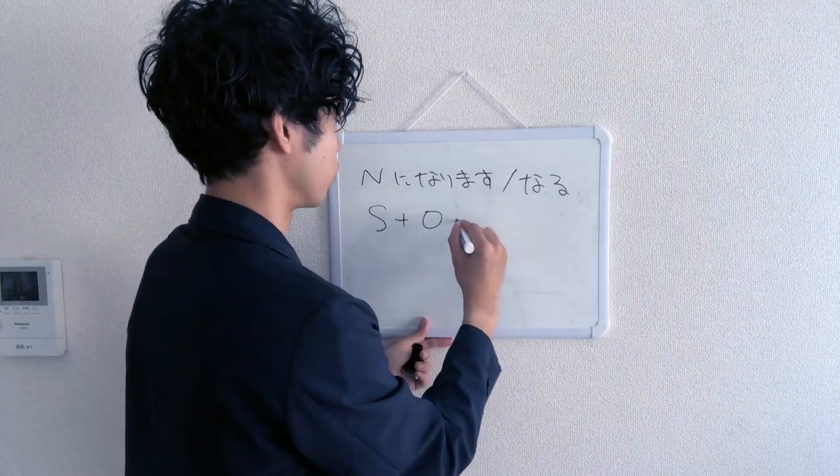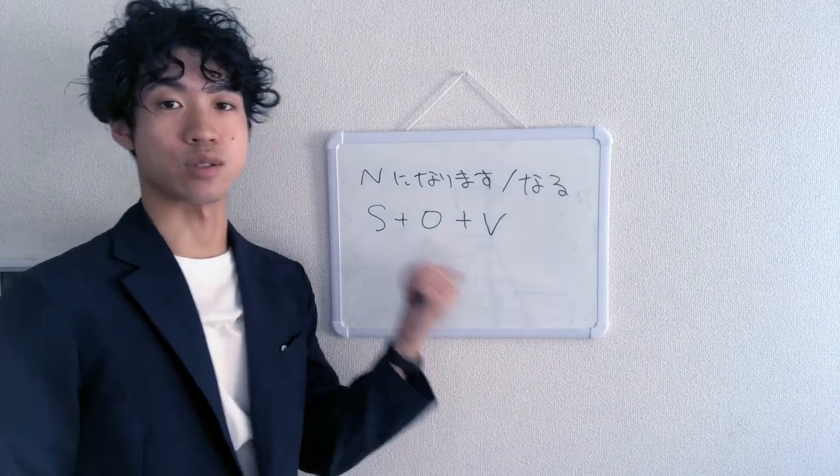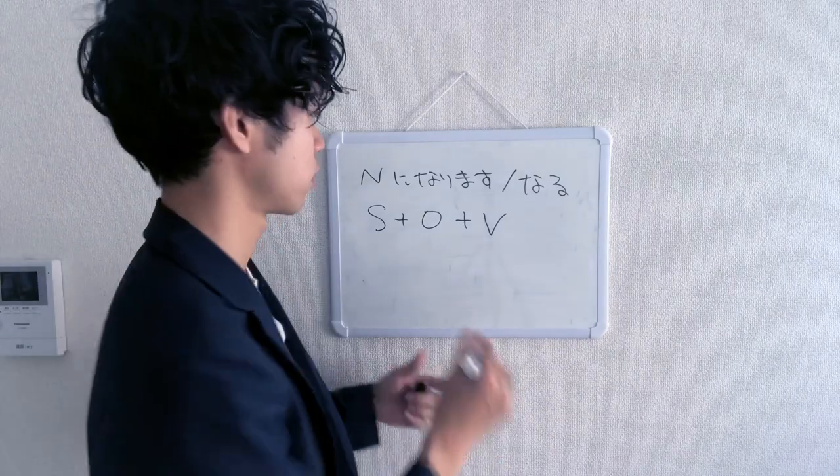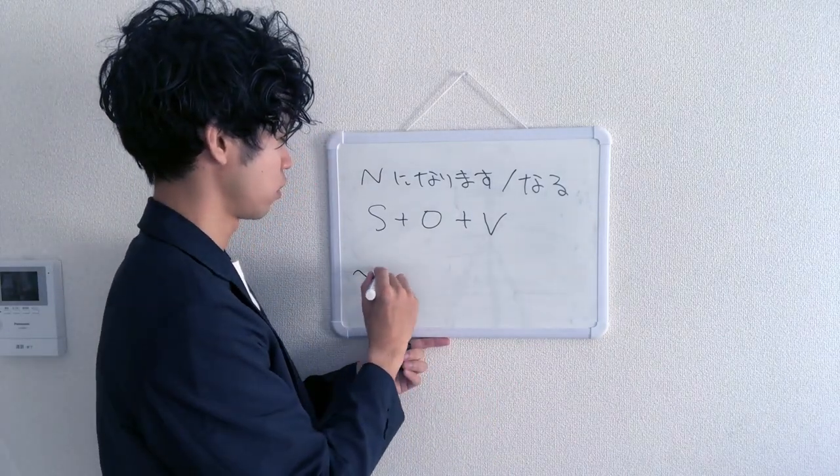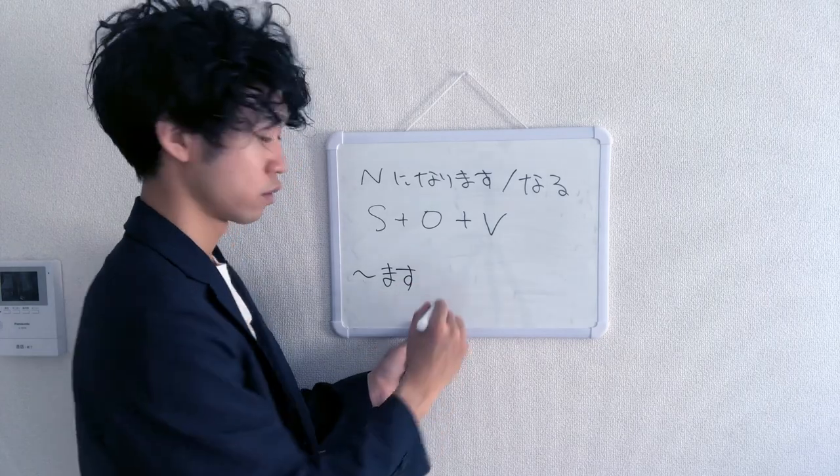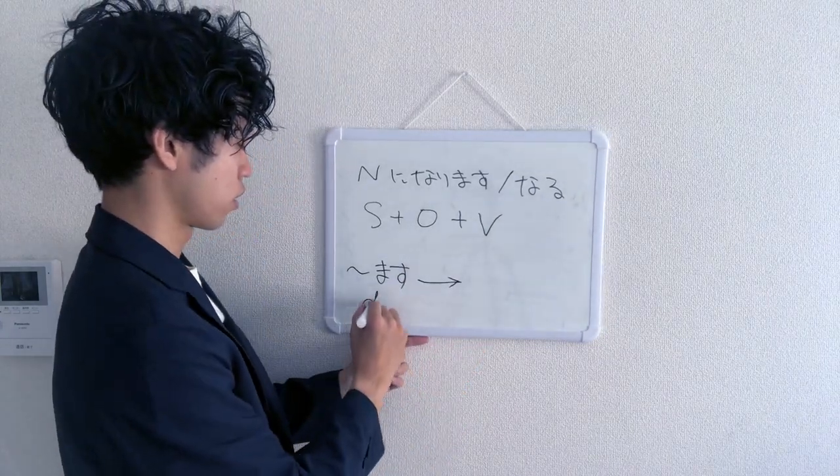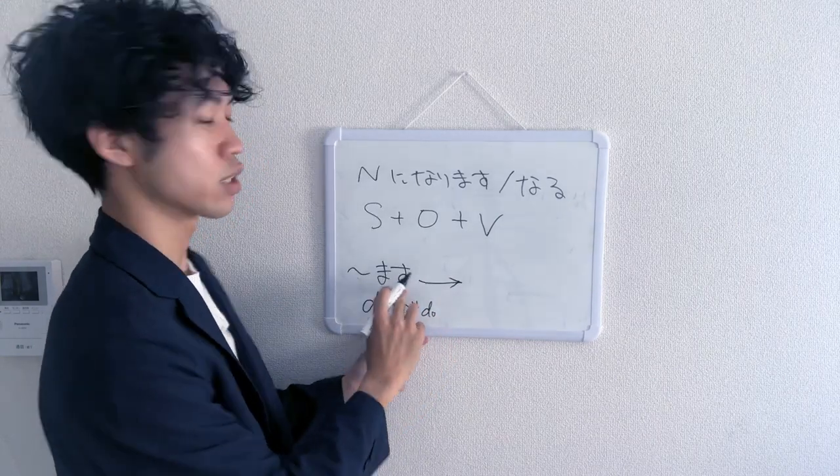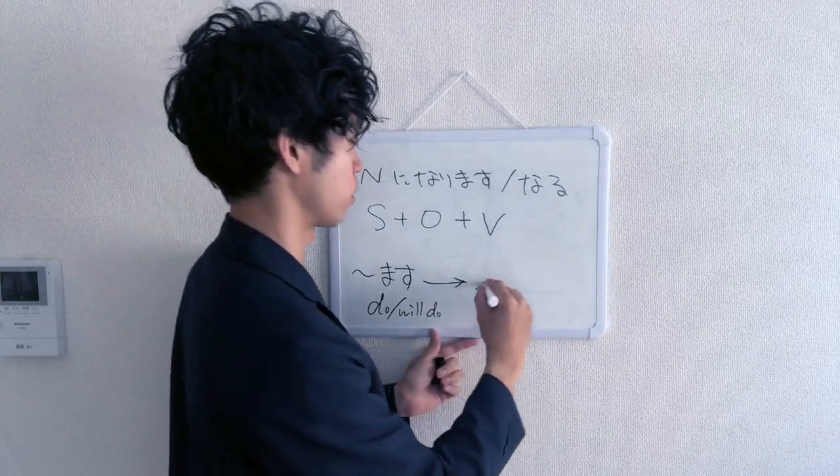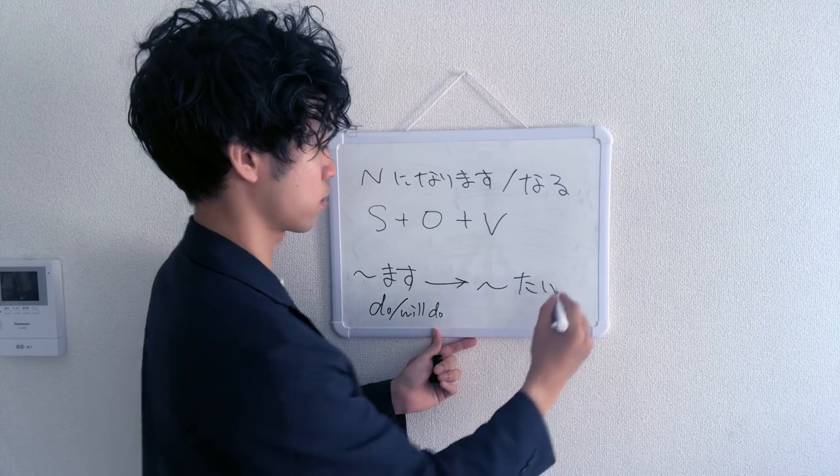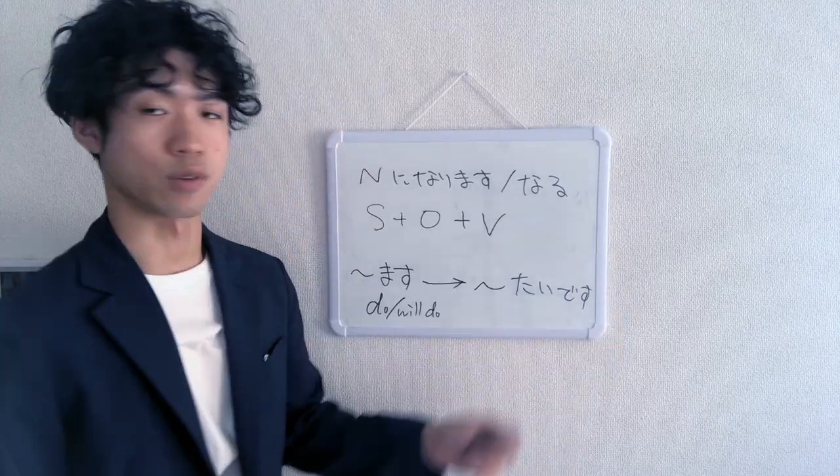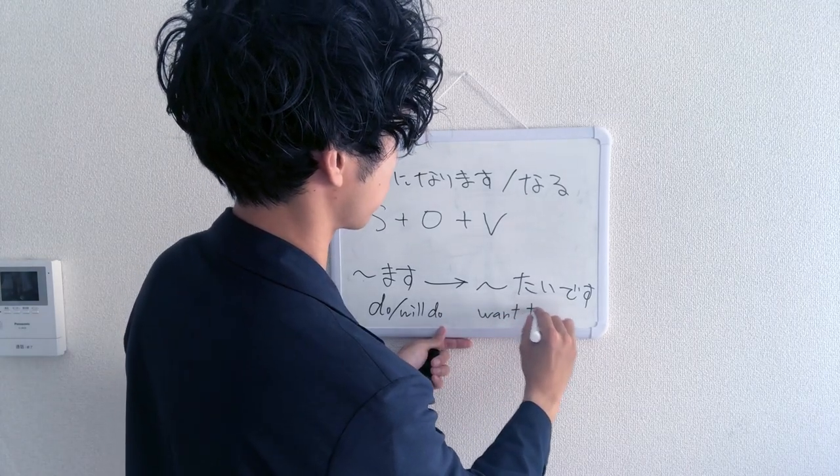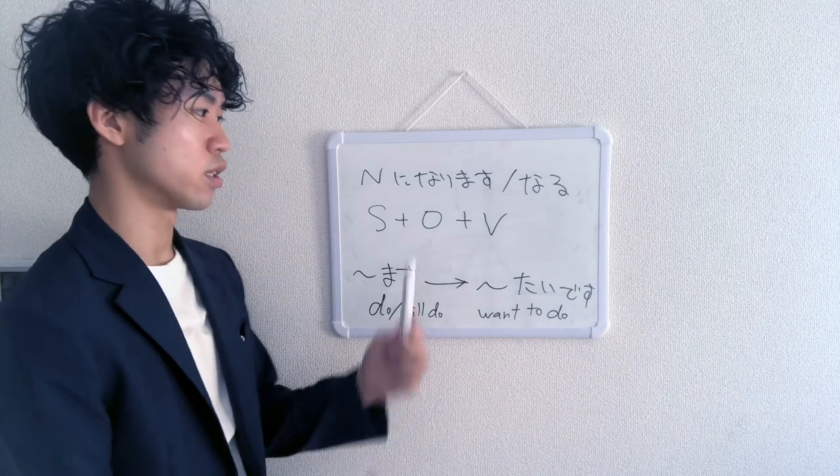We also learned SOV, that's a Japanese sentence structure. That is a natural sentence structure. And we also learned at the end, masu, that's do, right? Or will do. Again, just present tense, but it can be future tense too. It becomes tai, if you want. Want to do. So these are the key takeaways that we did.